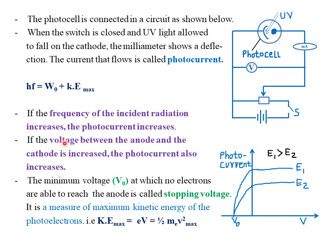Similarly, if the voltage between the anode and cathode is increased, the photocurrent also increases. Increasing the battery power raises the potential difference between anode and cathode, accelerating the electrons at very high kinetic energy. The higher potential difference ensures even more electrons are accelerated towards the anode at very high speed, resulting in a higher photocurrent recorded by the milliammeter.